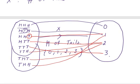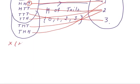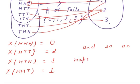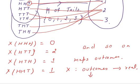Writing this in function form: X(HHH) = 0, X(HTT) = 2, X(HTH) = 1, X(HHT) = 1, and so on. In summary, a random variable X maps outcomes of a random experiment E to real numbers.